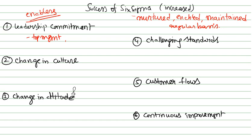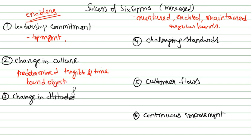Change in culture focuses on achieving predetermined, tangible, and time-bound business objectives. The culture changes due to shifts in the perspective of delivering tangible or positive results. Change in attitude involves a complete change in the attitudes of management and organizational employees.